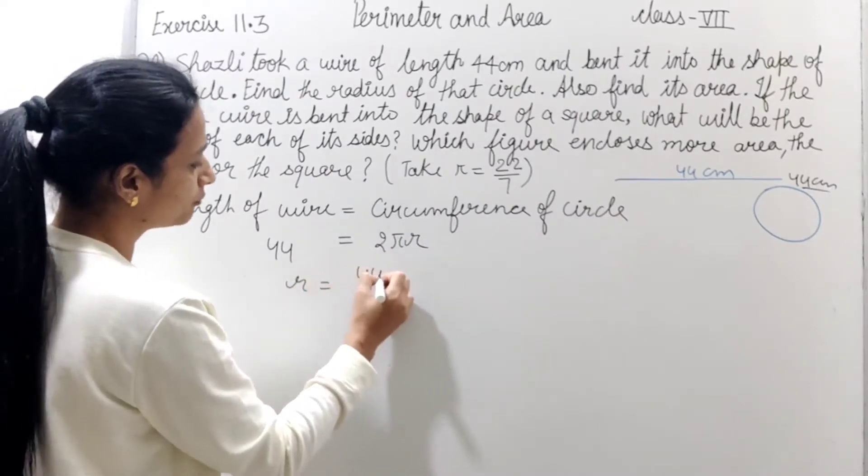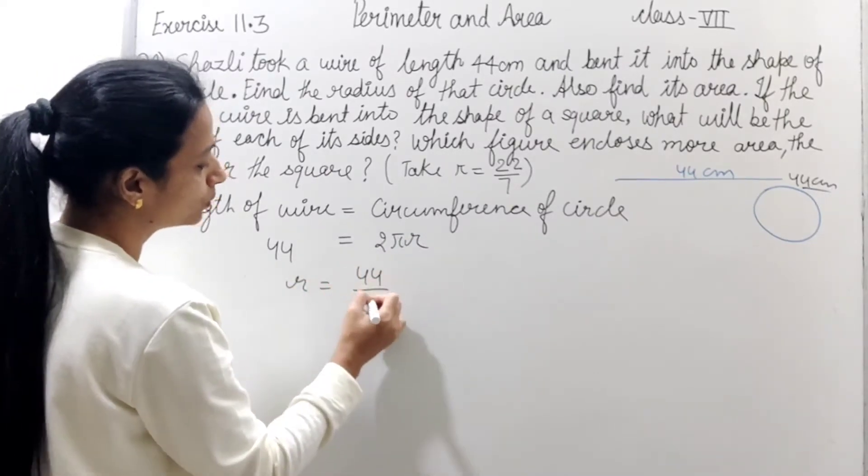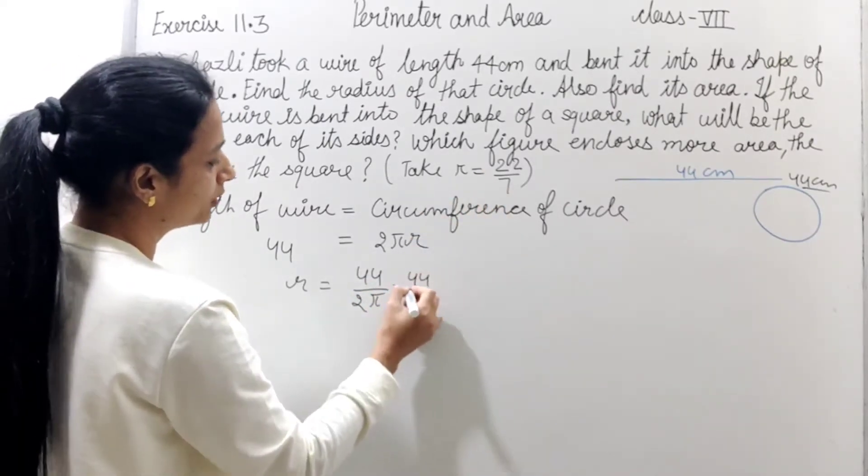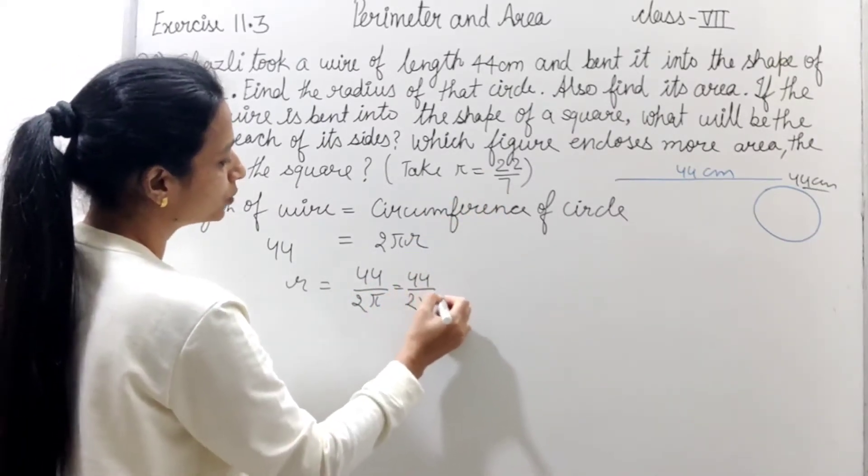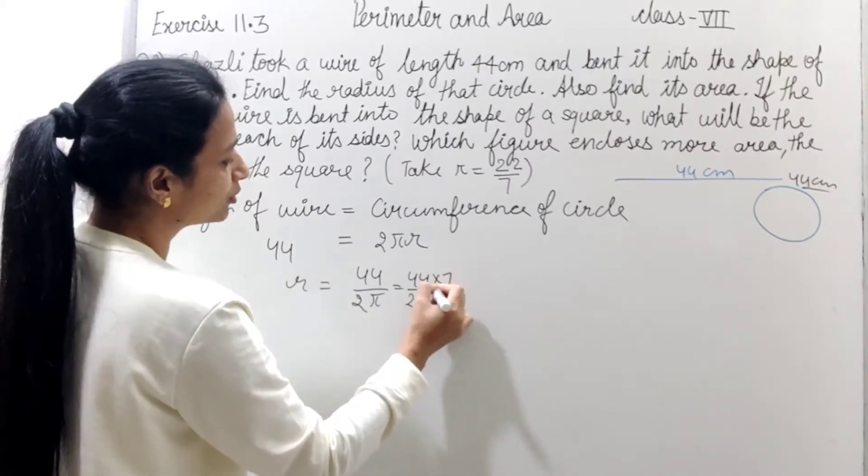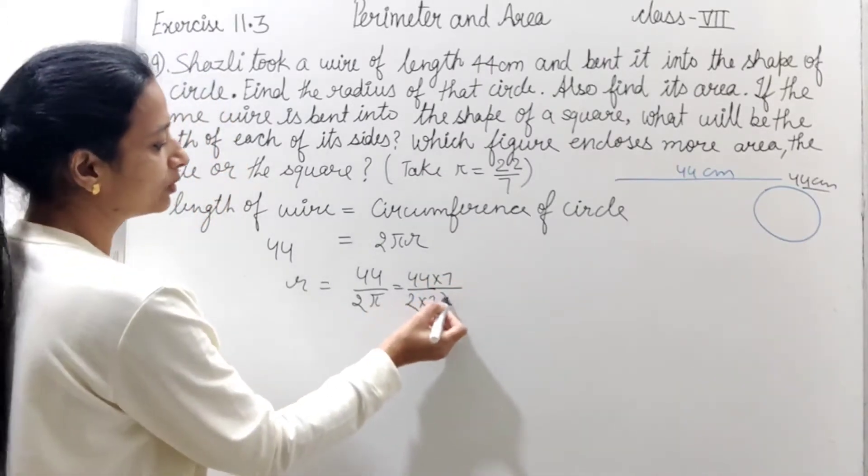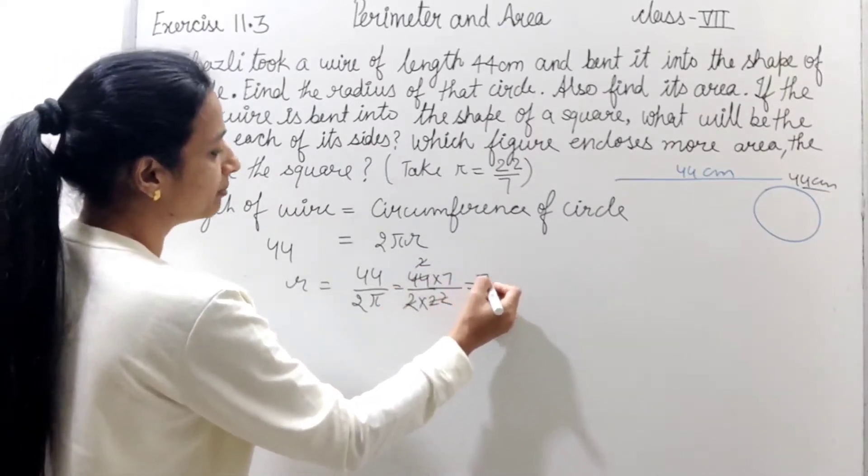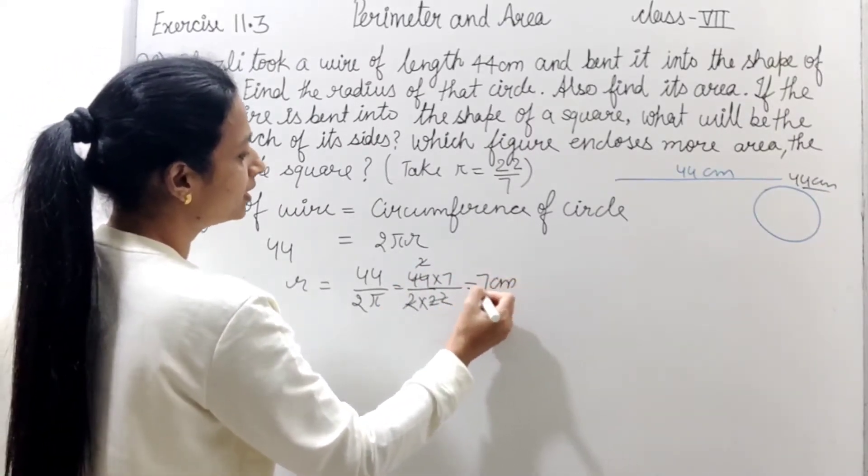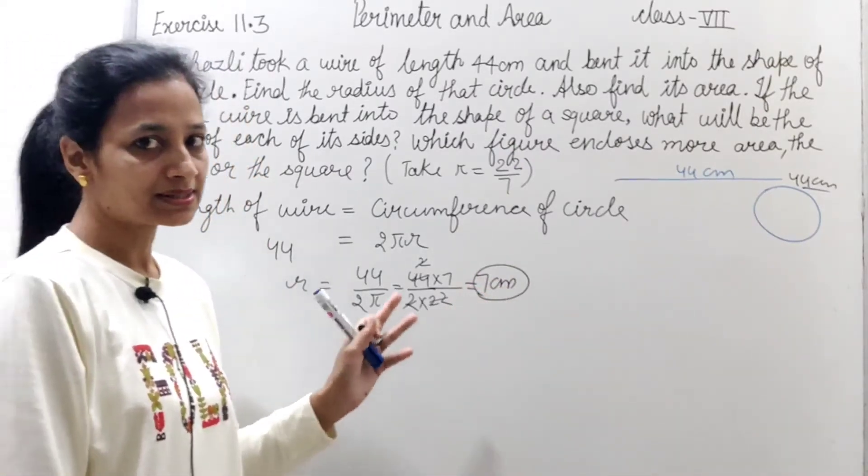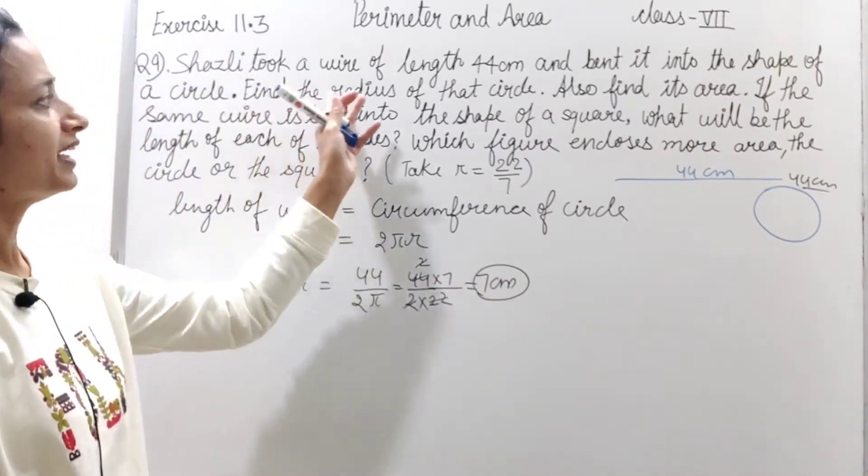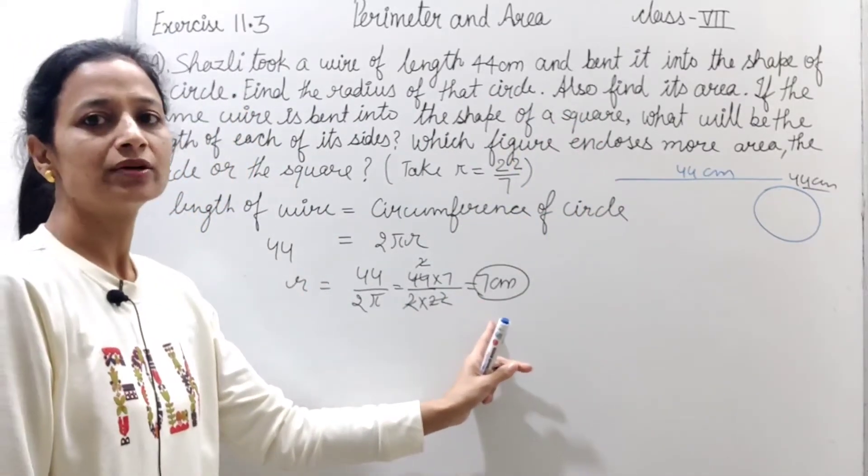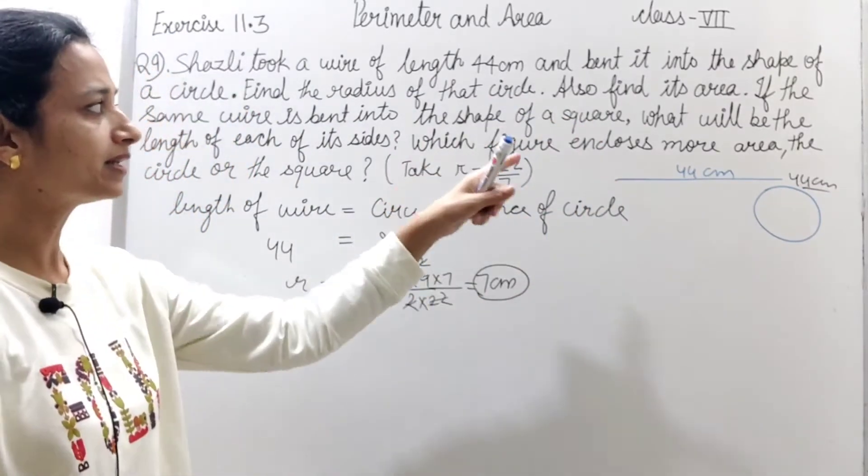Length of wire equals to circumference of circle. To length kitni dhi hai? 44. Or circumference kya hoti hai? 2 pi r. To yahan se hum r ko nikaal sakte hai. r equals to 44 upon 2 pi. 44 upon 2 into 22/7. Isse calculate karenge, 7 cm. Ye kya aagay hai? Hamari radius. To radius kitni hauski? 7 cm.